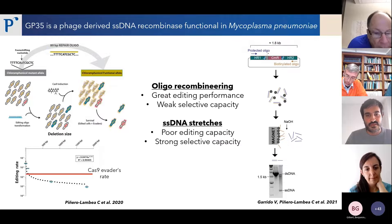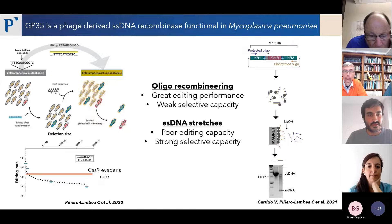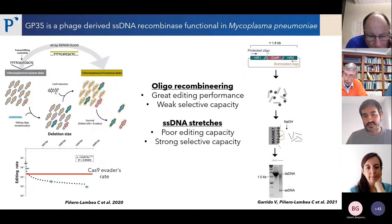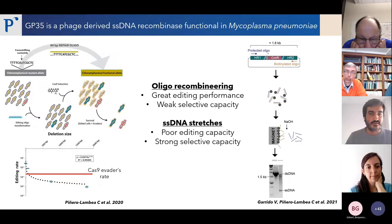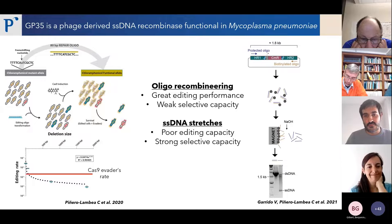Neither system was perfect. Oligorecombineering showed great editing performance — many cells incorporated the oligo and the modification took place — but we could not select those cells carrying the modification. On the other hand, single-strand DNA cassettes showed poor editing capacity because of their size; they are not introduced efficiently into the replication fork. But given the antibiotic resistance, it was easy to select those carrying the intended modification. So we asked: can we get the best of both — the great editing performance of oligorecombineering and the strong selective capacity of an antibiotic resistance gene?